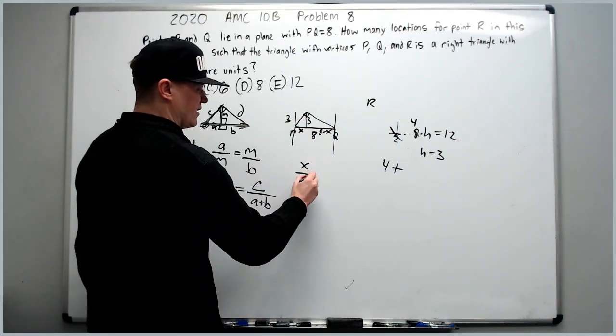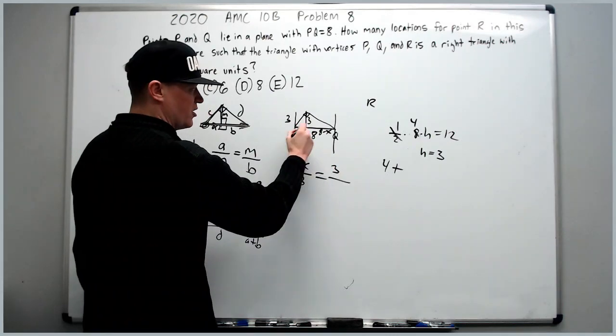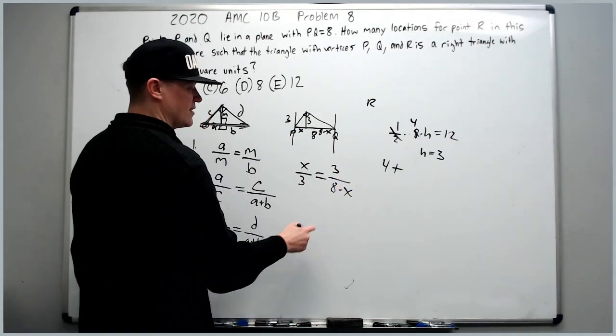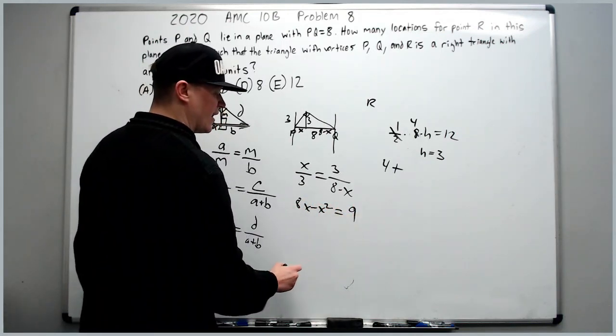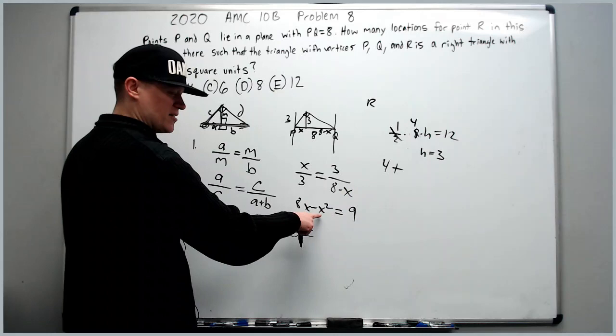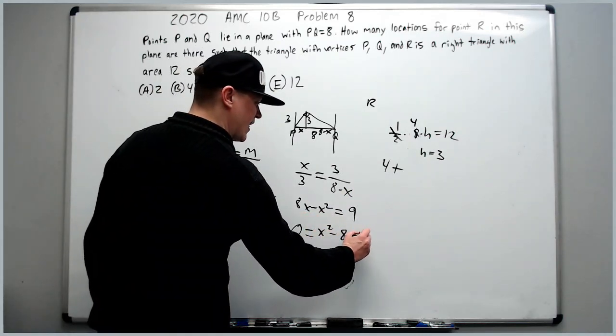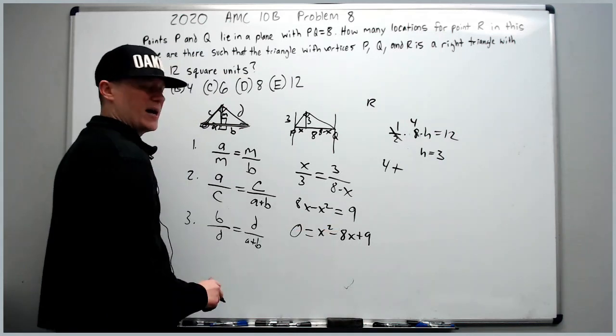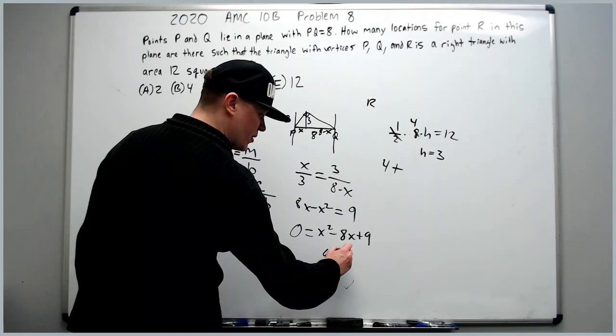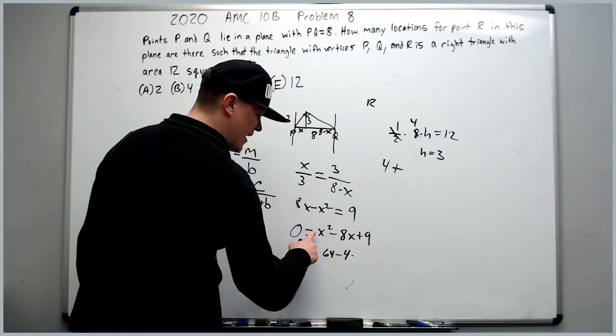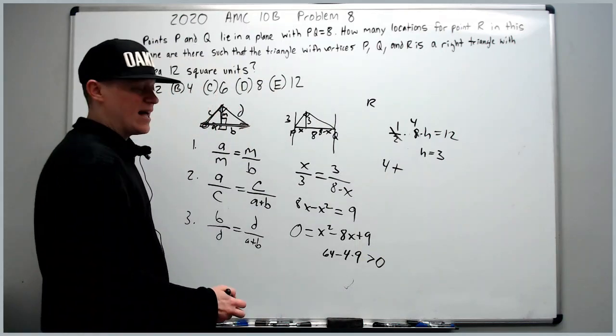Let's get back to this one. X over 3 is equal to 3 over 8 minus X. Cross multiply to get 8X minus X squared equals 9. Move everything to the right so I get a positive X squared term. X squared minus 8X plus 9. We want to know how many solutions this has. So if I do B squared, I get 64 minus 4AC. A is 1, C is 9. This is greater than 0.